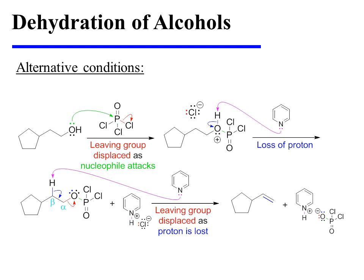Here is a specific example. The reaction begins with the attack of the hydroxyl group on the electrophilic phosphorus of phosphorus oxychloride, which ultimately displaces a chloride from the molecule. An intermediate oxonium ion is formed, and that oxonium ion loses a proton to pyridine to neutralize the charge on the oxygen. At this stage, the hydroxyl group has been converted from a poor leaving group into a good one, and E2 elimination can now take place. A second equivalent of pyridine removes a proton from the only beta position. As the carbon-hydrogen bond fragments, those electrons collapse in between alpha and beta, displacing the leaving group, and the product alkene is formed.